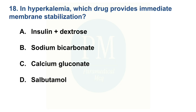In hyperkalemia, which drug provides immediate membrane stabilization? Option A: Insulin plus dextrose. Option B: Sodium bicarbonate. Option C: Calcium gluconate. Option D: Salbutamol. The correct option is Option C — Calcium gluconate.